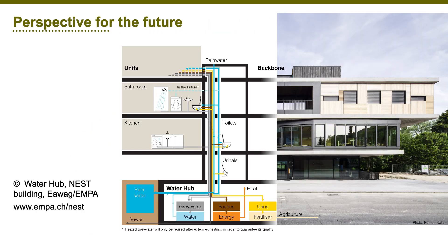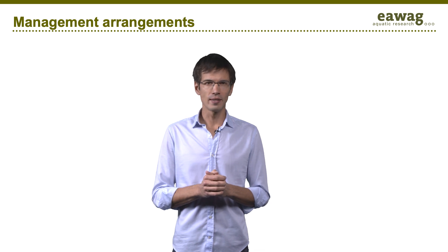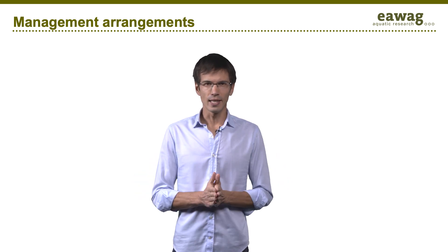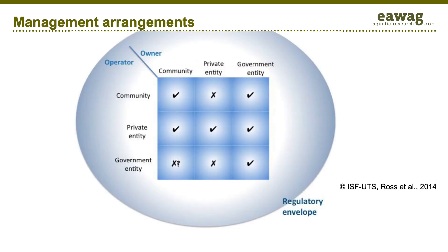In the future, we could also think of separating all sanitation flows for maximum reuse of water, energy, and nutrients, such as currently pioneered in the NEST building in Switzerland. Please consider the requirements for operation and maintenance when selecting technical options, such as running costs, skills needed, and sludge management. There are many possible management arrangements for these systems, which can be owned, managed, and operated by different stakeholders. This figure from the Institute for Sustainable Futures illustrates the different possible configurations of ownership and operation.